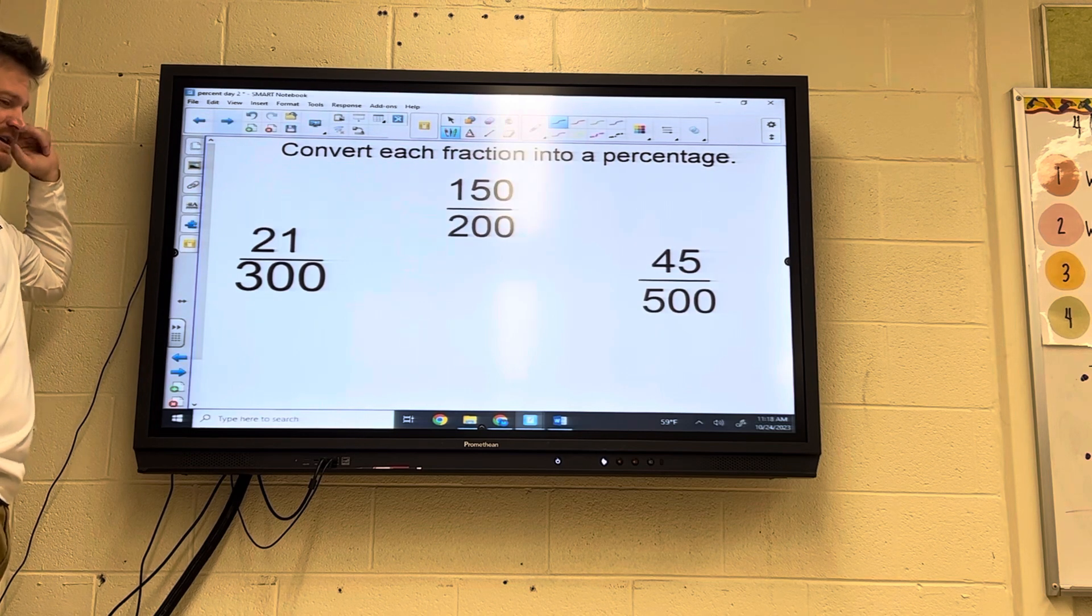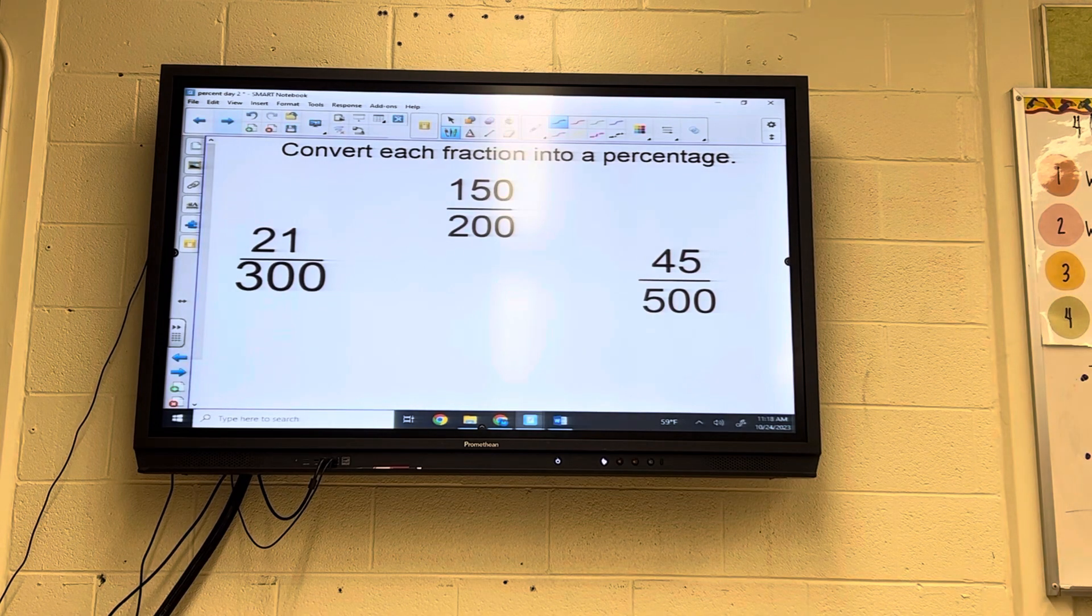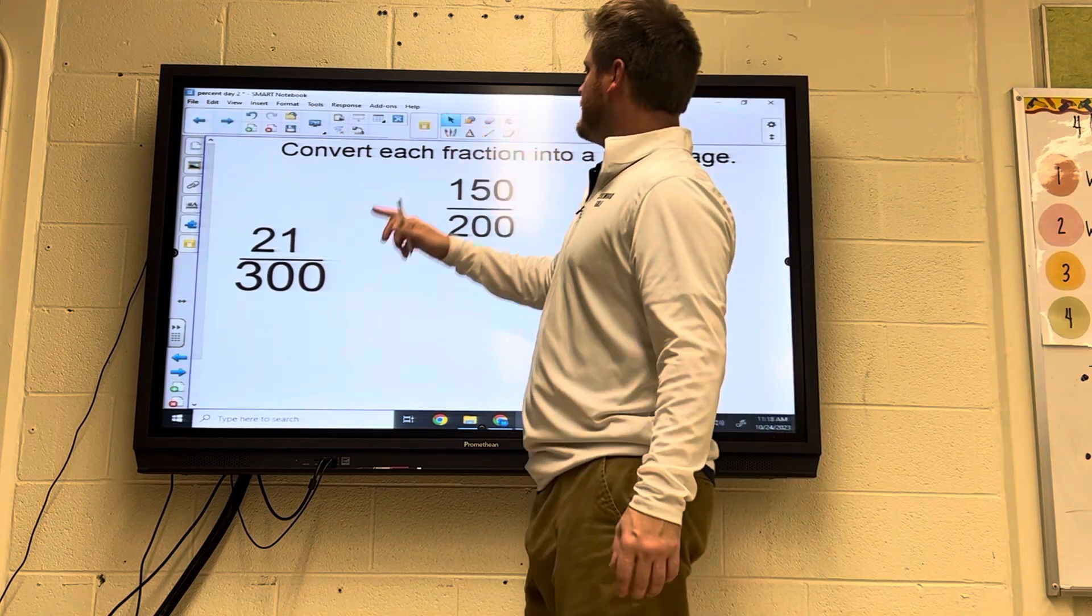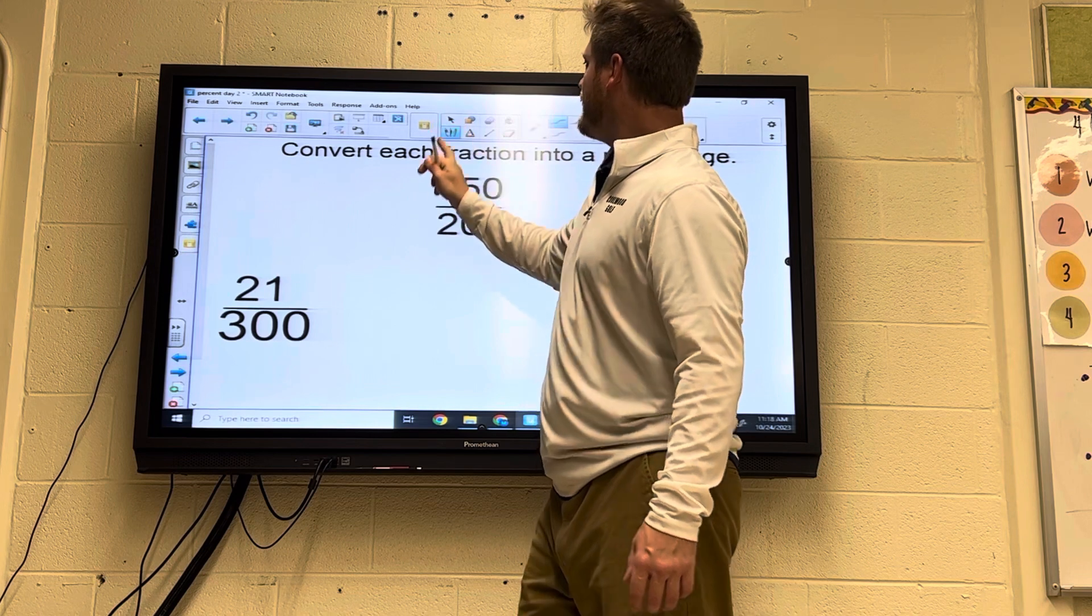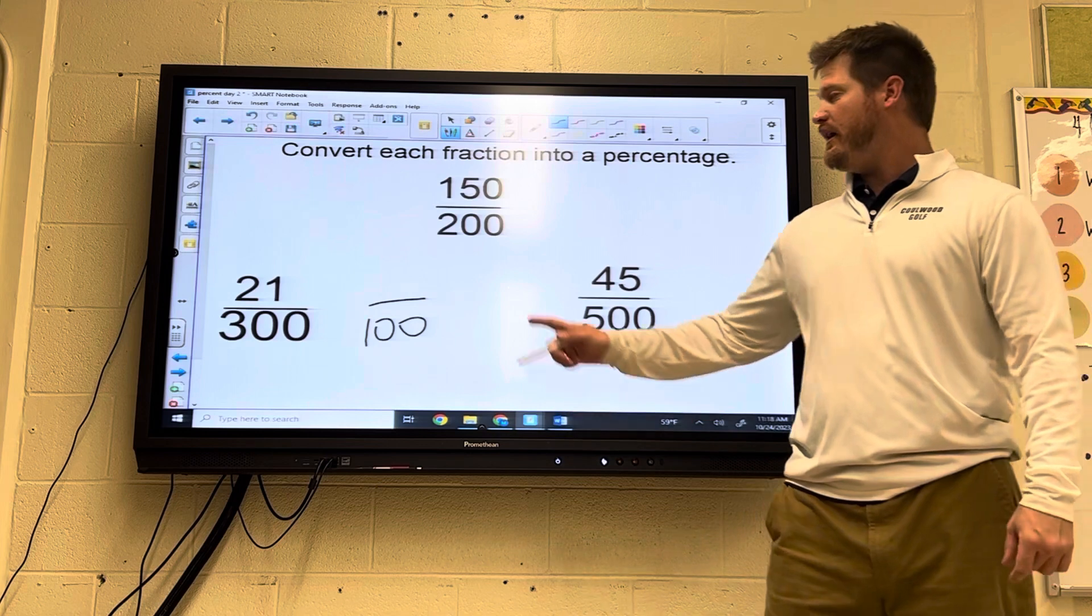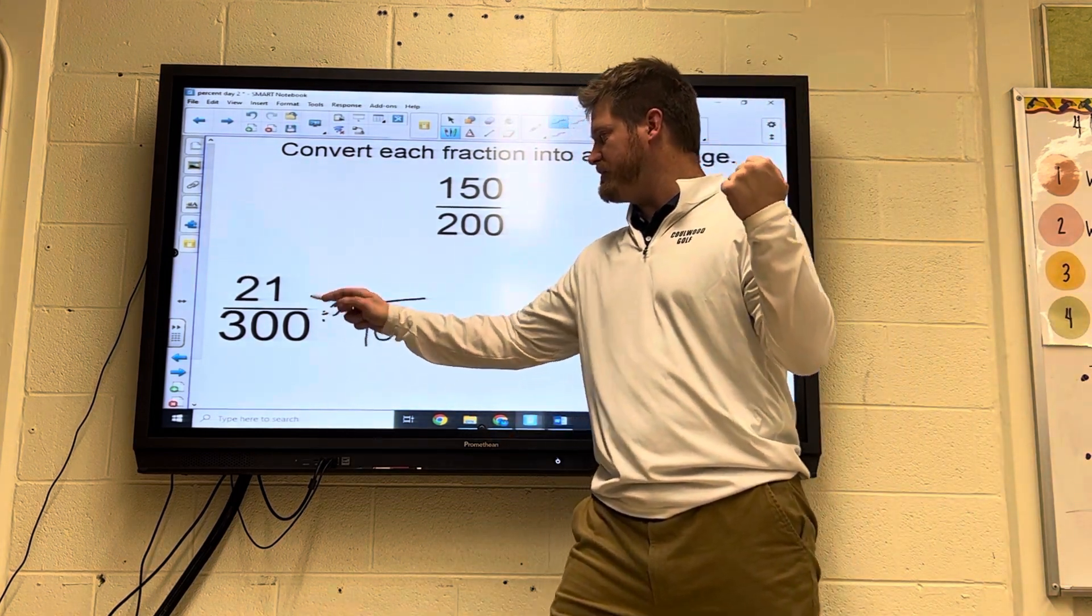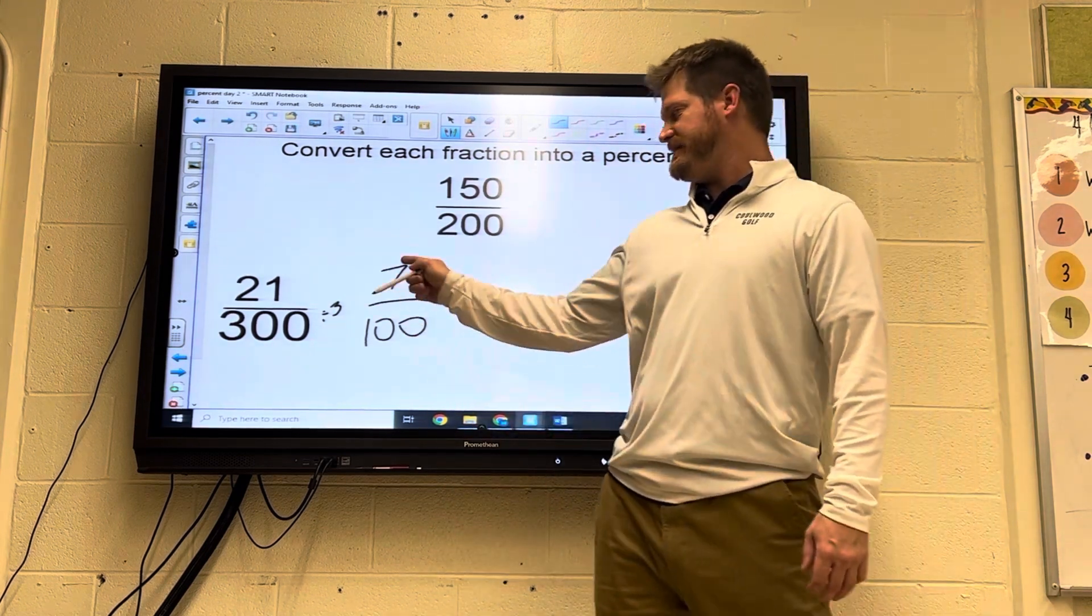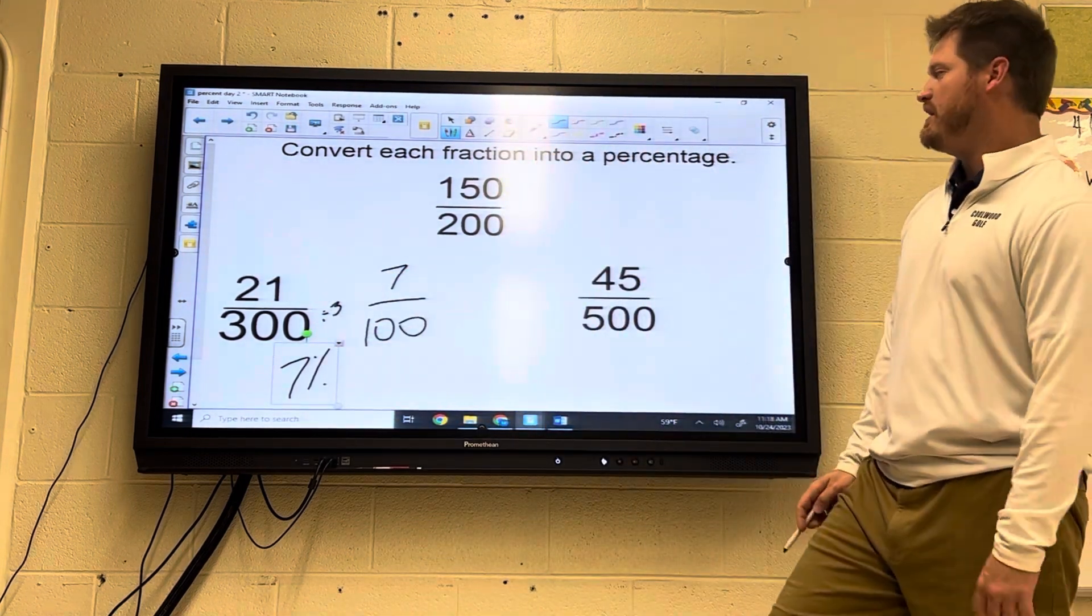Based on this example, try these on your own. Pause. Alright, let's look at these. Okay, again, percent always out of 100. We're going down, so we're dividing. 100 goes into 300 three times. So 300 divided by 3 is 100. What are you at the top? Do the bottom. And 21 divided by 3 is 7. 7 out of 100 means 7%. 21 out of 300 is just 7%.